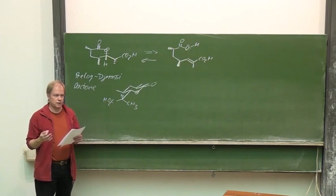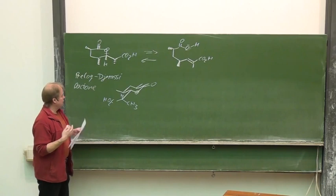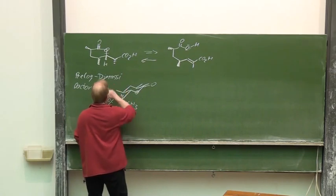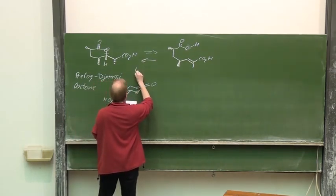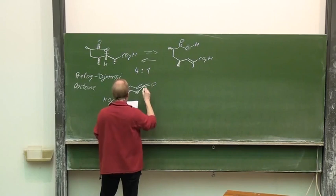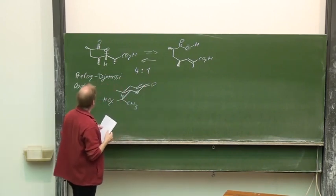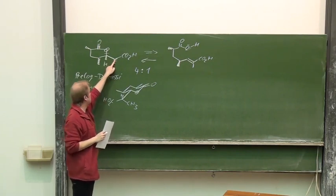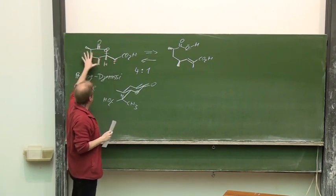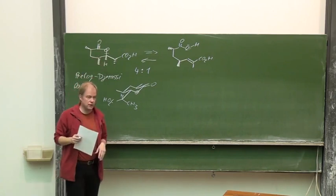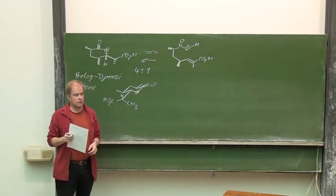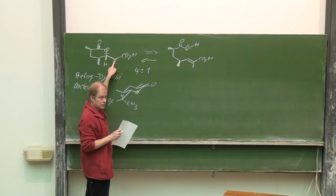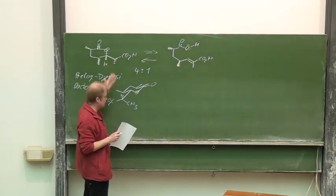And indeed, in the thermodynamic equilibrium, we have this structure with a selectivity of four to one concerning its C2 epimer. All the other three stereogenic centers are highly selective, almost 100%. Here, four to one. It's the preferred one.